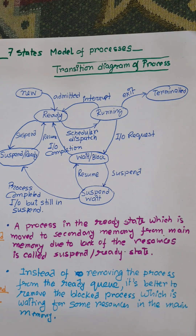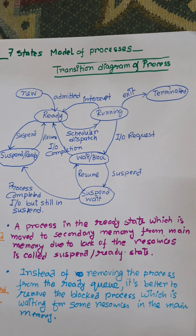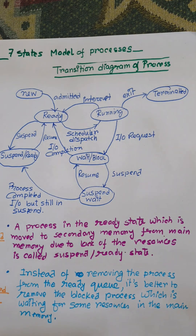Ready state — which is in the ready state — is moved to secondary memory from main memory due to the lack of resources. And suspend wait means instead of moving the process from the ready queue, it is better to remove a blocked process which is waiting for some resources in the main memory. So these are the seven states: two states are added, that is suspend ready and suspend wait.